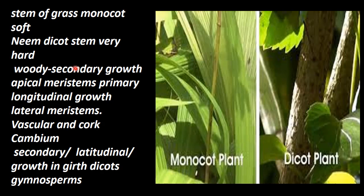In secondary growth, there are two differences. Primary growth is the longitudinal growth of the plant. The apical meristome at the tip undergoes continuous division, causing longitudinal elongation — that is called primary growth.